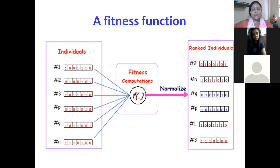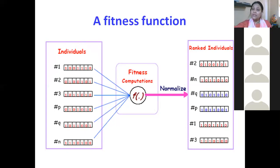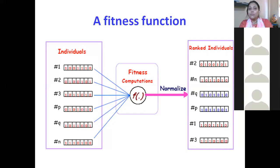You have a randomly generated population in the first generation when you are starting your algorithm. You have a number of individuals in the population. What you need to do is feed each individual — these bit strings like one zero zero one one zero — into that fitness function. That means you are going to fit this value into the robot degree, which is now this bit stream, and you need to evaluate it.